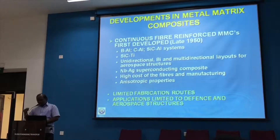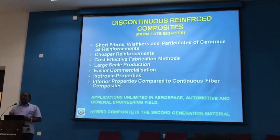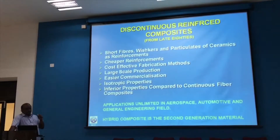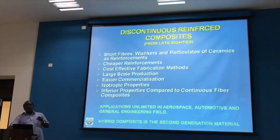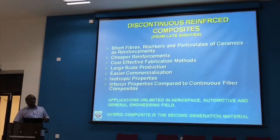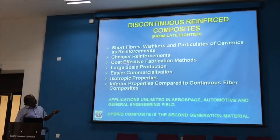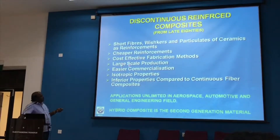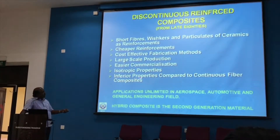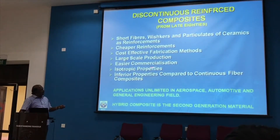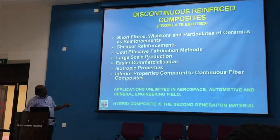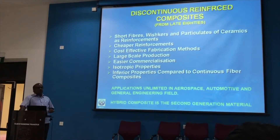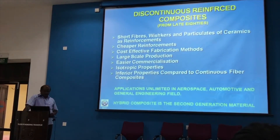For automobiles, discontinuous composites are developed where cost is also a factor. The discontinuous composites are mostly short fibers, whiskers, and particles — very fine particles of silicon carbide, alumina, graphite, and carbon short fibers. Whiskers are mostly single crystals. These are reinforced within metallic systems and the reinforcements are mostly cheaper. Cost-effective fabrication methods are developed, enabling large-scale production, easier machinability, and isotropic properties. Properties may be inferior compared to continuous composites, but they satisfy most requirements for automobile components. Applications span aerospace, automobile, and general engineering. People also utilize hybrid materials where both fibers and particles, or two types of particles, are used together.